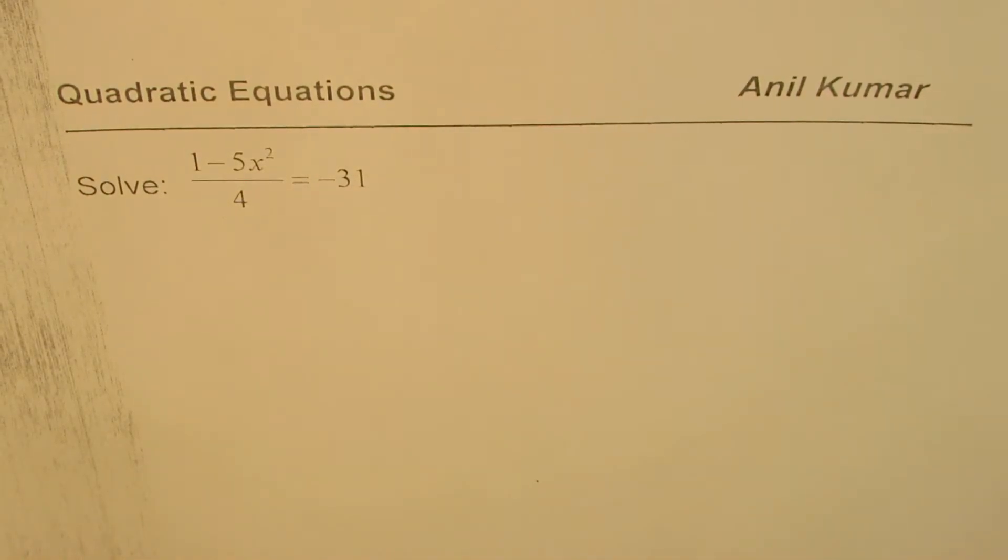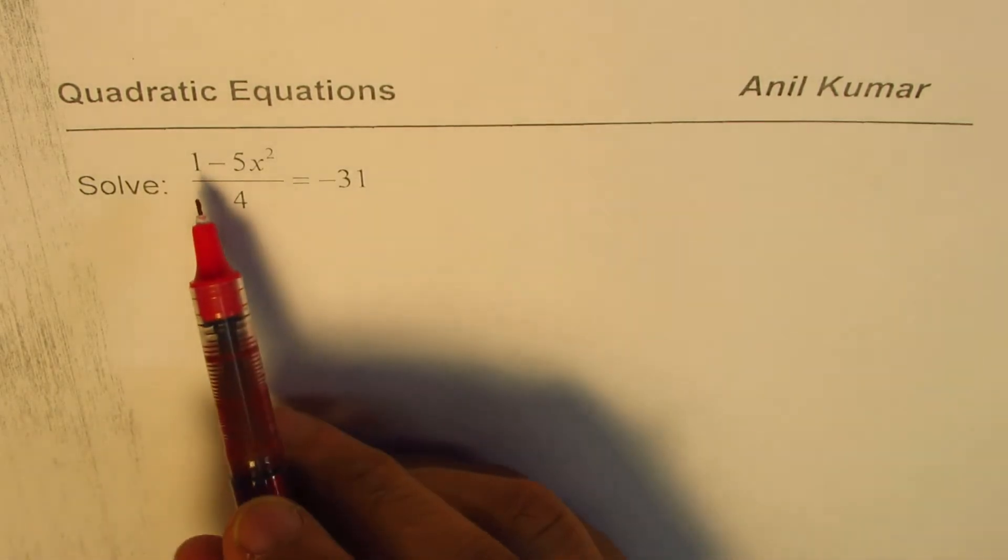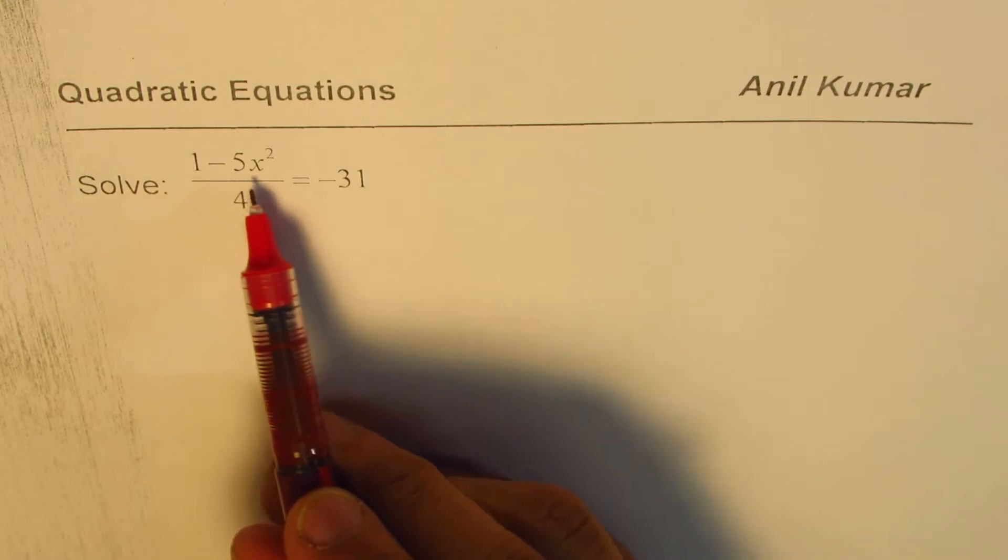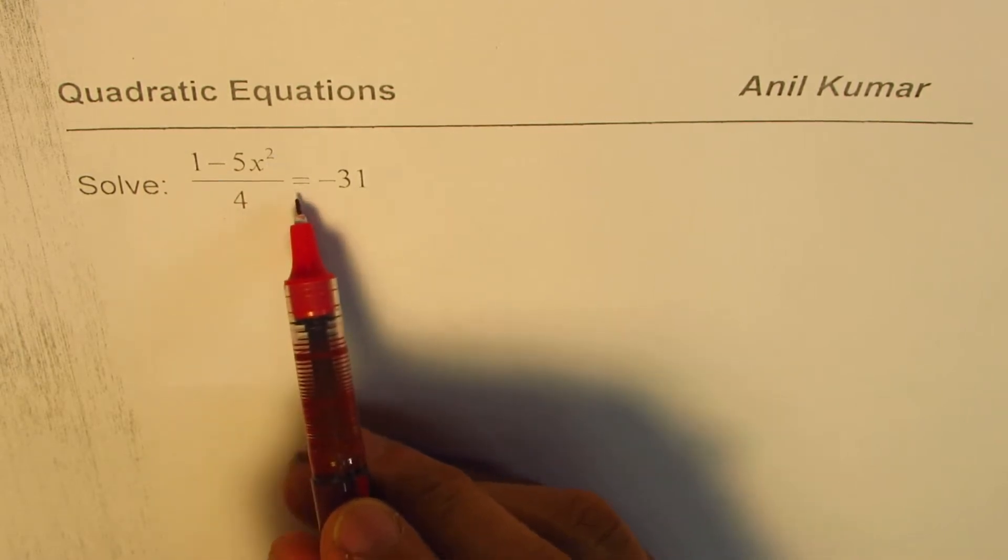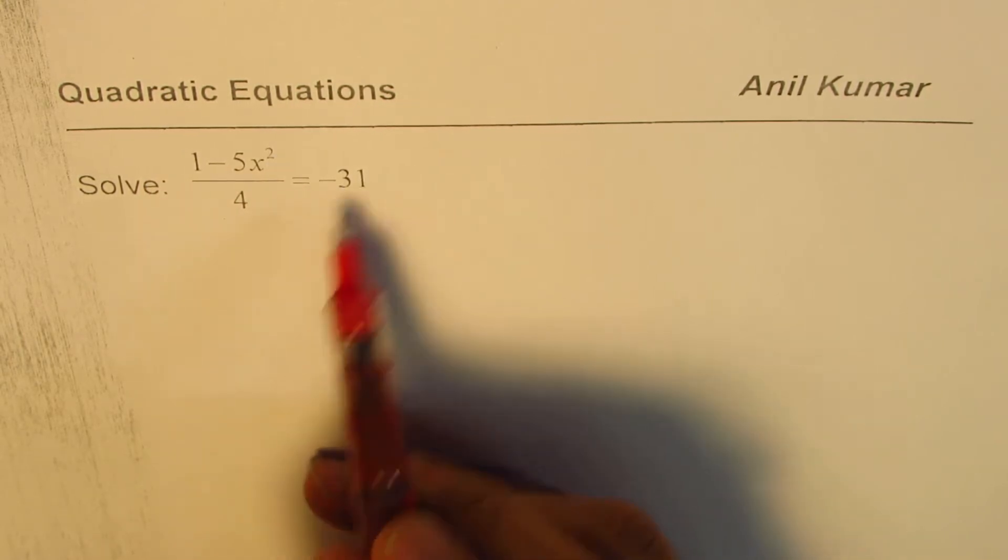I'm Anil Kumar. We are going to practice how to solve quadratic equations in this video. The equation given to us is 1 minus 5x squared divided by 4 equals minus 31.